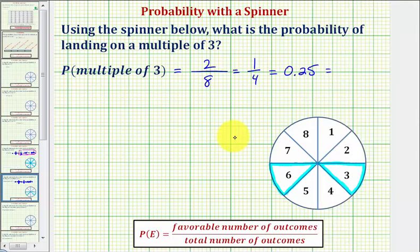And now to convert to a percentage, we multiply by one hundred and add a percent sign, or move the decimal point to the right two places and add a percent sign. So this is equal to twenty-five percent.